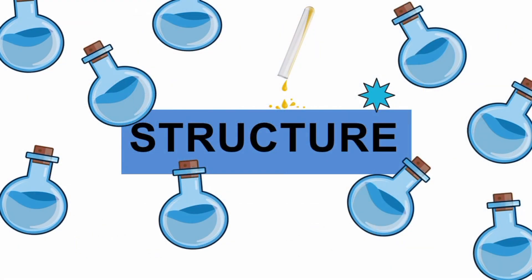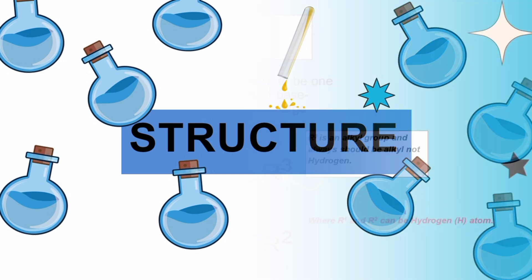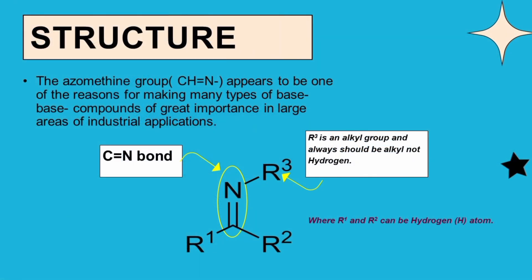The azomethine group is one of the main reasons for making Schiff base compounds of great importance in large areas of industrial applications. The carbon-nitrogen double bond is the main feature of Schiff bases. Three R groups are attached to the carbon-nitrogen double bonded group: R3 is always an alkyl group and cannot be a hydrogen atom, but R1 and R2 can be hydrogen atoms.